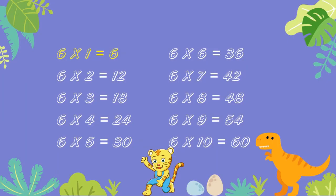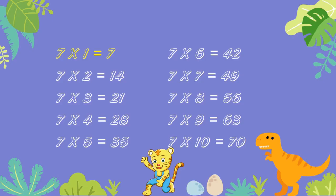6 ones are 6. 6 twos are 12. 6 threes are 18. 6 fours are 24. 6 fives are 30. 6 sixes are 36. 6 sevens are 42. 6 eights are 48. 6 nines are 54. 6 tens are 60.